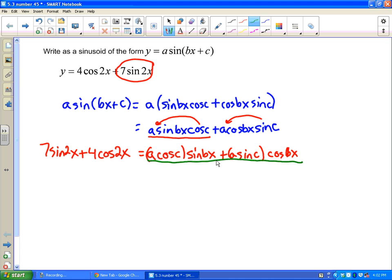If you can memorize this part that I'm about to underline in green, you can memorize this, you can get the whole rest of the problem. This is pretty much the most important thing in my opinion to this problem, because what it's saying is that the coefficient in front of sine of bx is a cosine c. If I look over here the coefficient in front of sine 2x is 7, so if these two things really are equal that means that 7 equals a cosine c.